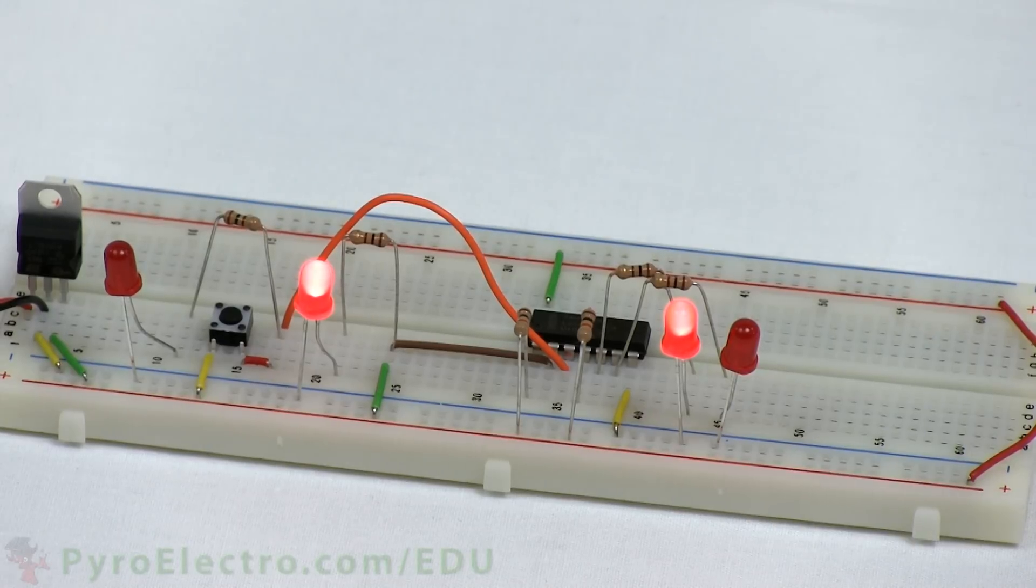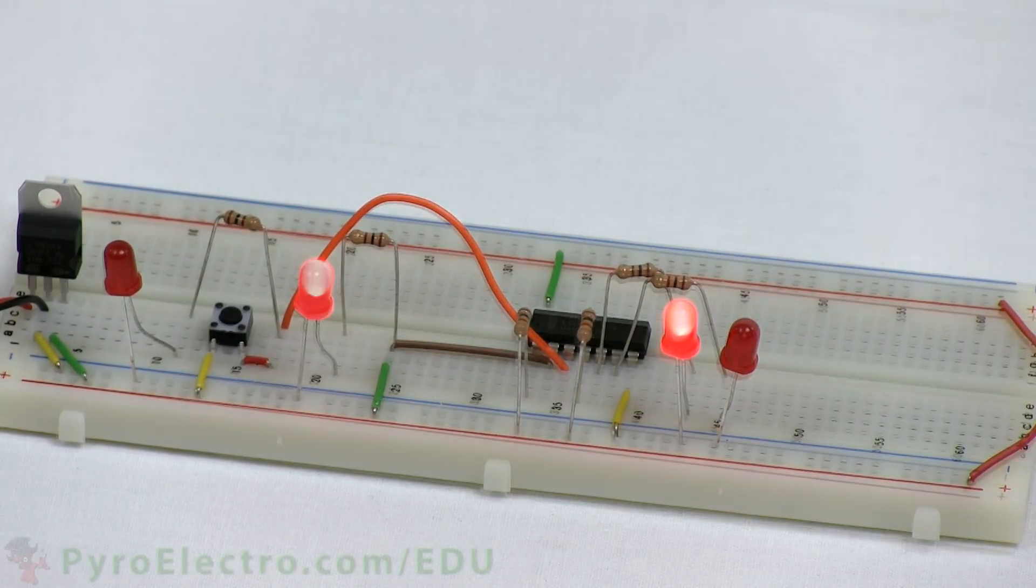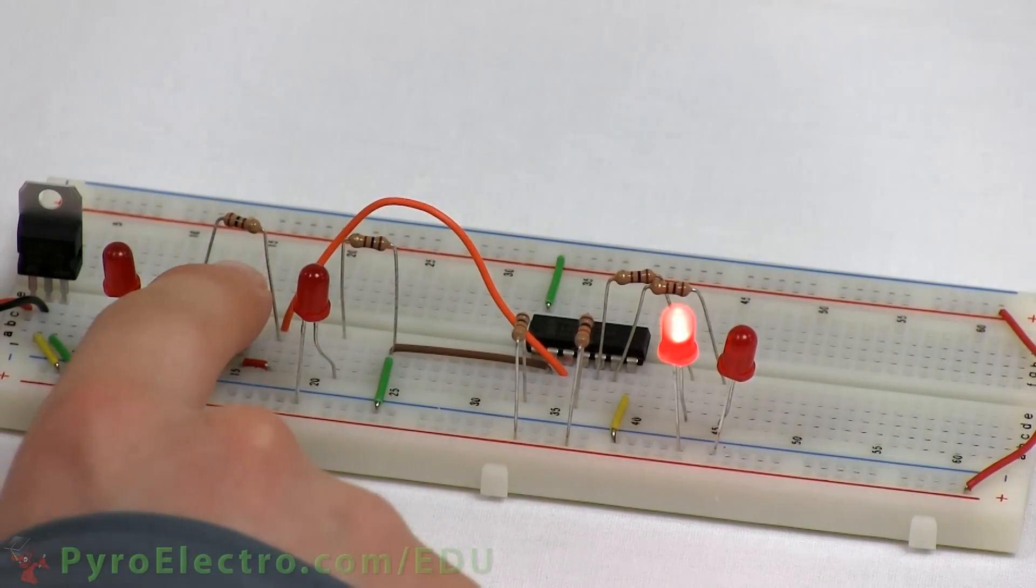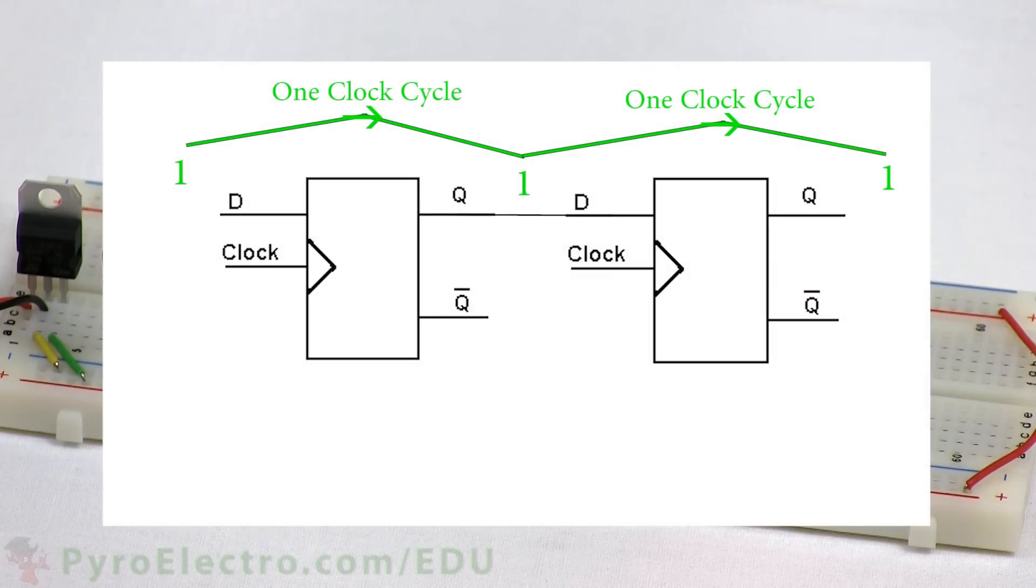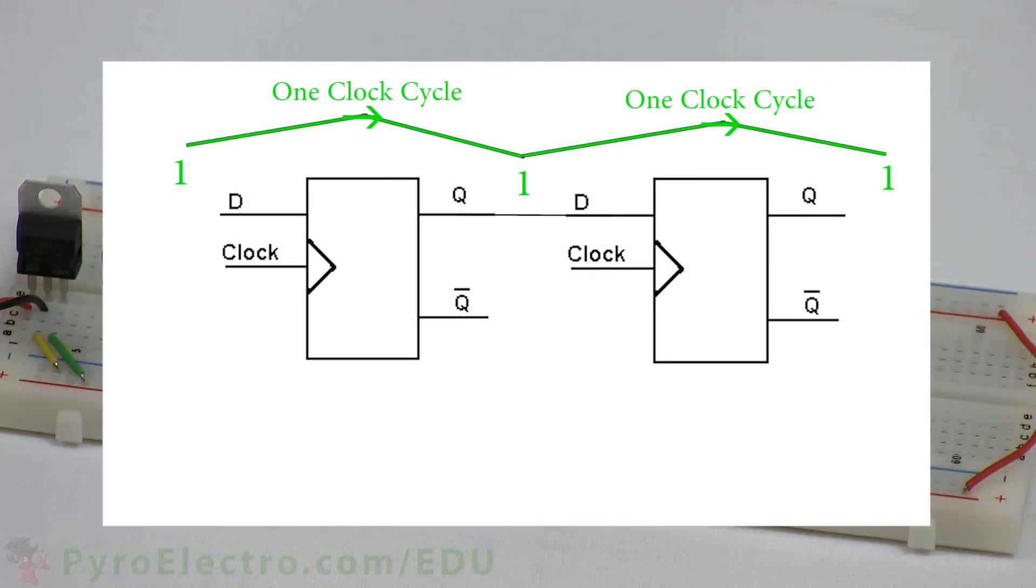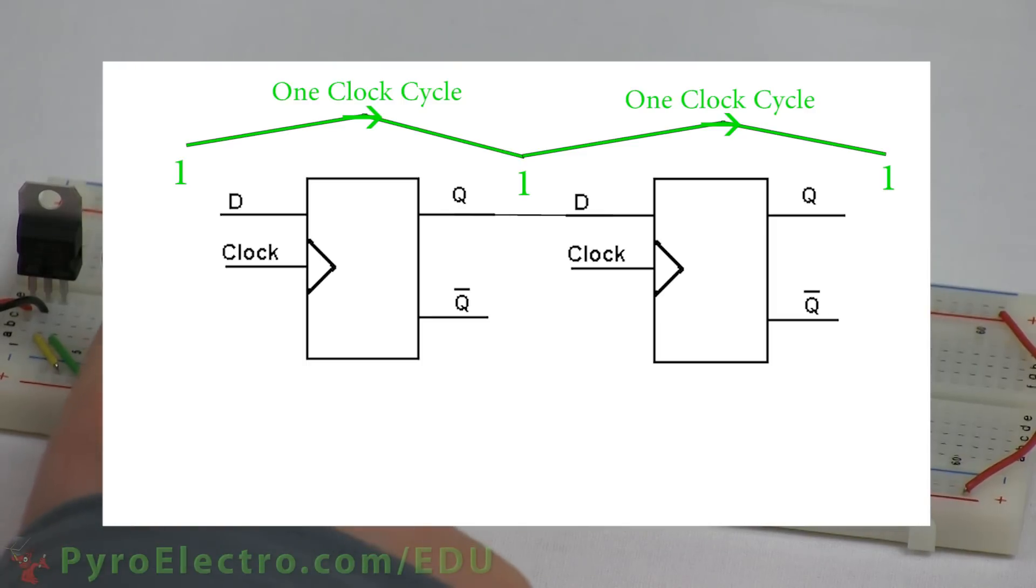A delay flip-flop, as we learned last time, takes one clock cycle or period to transfer the data from input to its output. So if we had two D flip-flops connected in series like this, it would take two clock cycles or periods for the input data to reach the second D flip-flop's output.